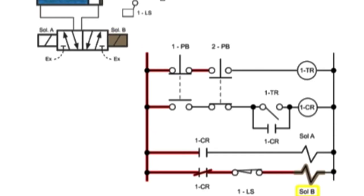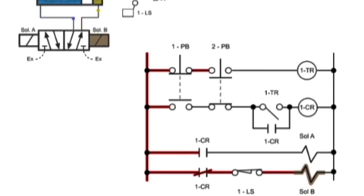This shifts the valve, allowing the rod end of the cylinder to fill with fluid and retract the cam. When the cylinder is fully retracted, the cam energizes and opens limit switch 1, which removes power from solenoid B.